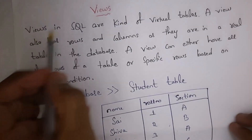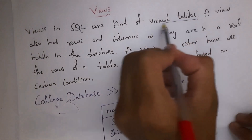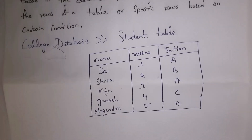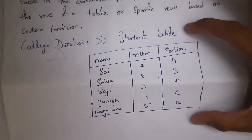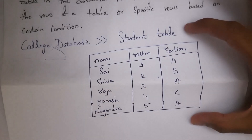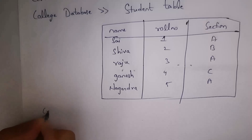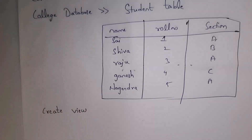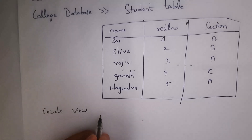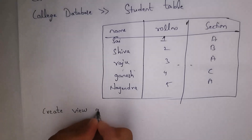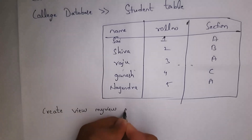A view is a virtual table. Just by writing a single line of code you can create this table. Write here: CREATE VIEW, then give the view name. For example I want to give the view name as 'my_view'. So write: CREATE VIEW my_view AS.